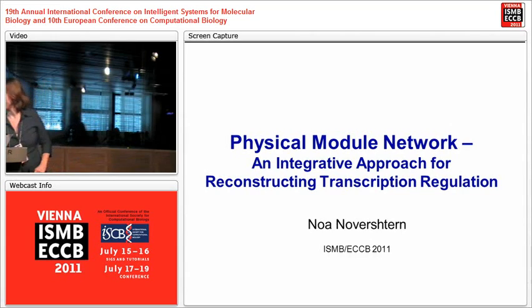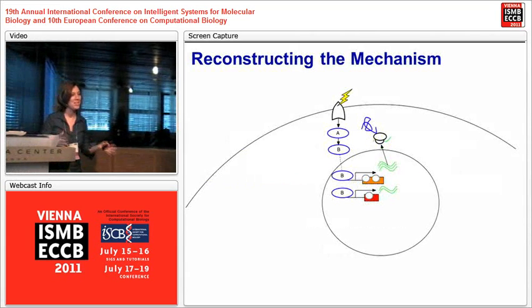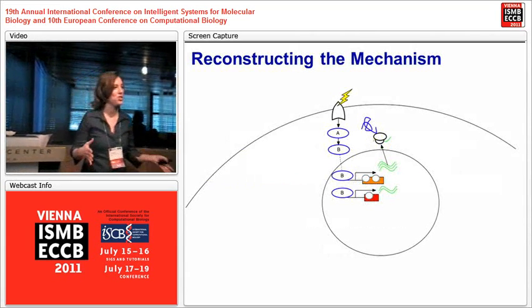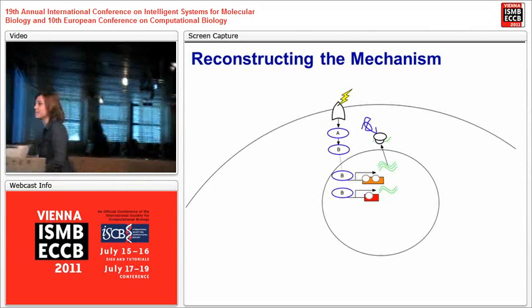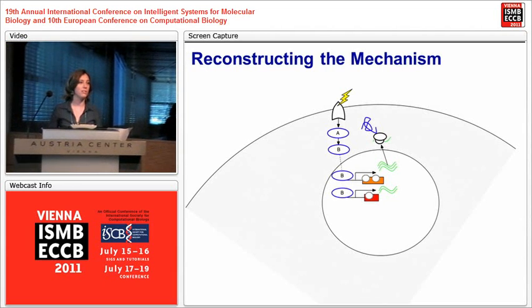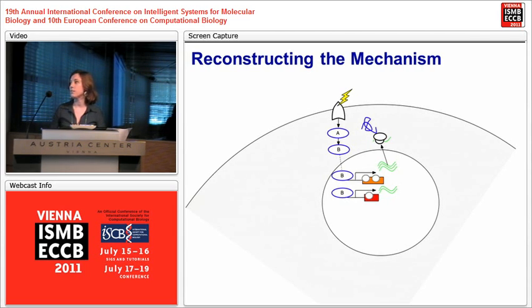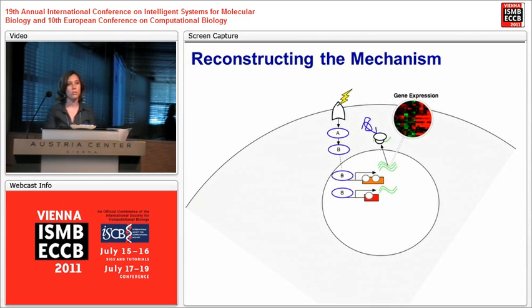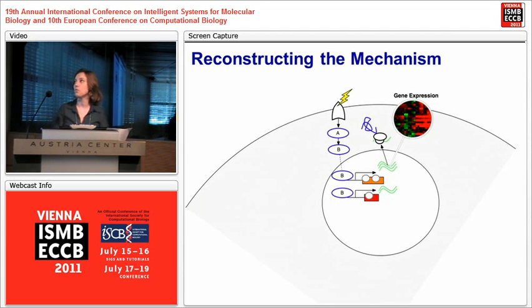As we all know, the cell is an amazing machine that responds very efficiently to external and internal signals. Once a signal arrives to the cell, it usually initiates a cascade of signal transduction that ends with a transcription factor that enters the nucleus and either activates transcription or changes the chromatin state. In the last decade, we have lots of data accumulated, mainly gene expression, which was used to reconstruct the networks of transcription regulation.